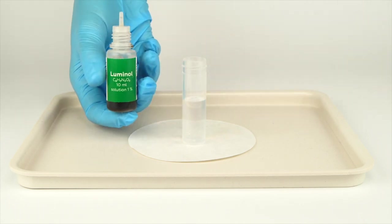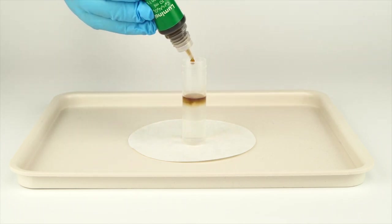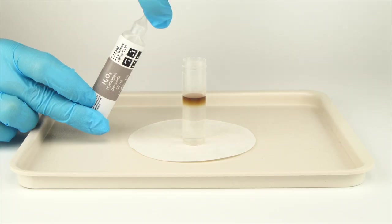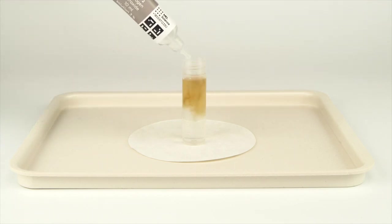Add 15 drops of luminol solution. Next, add an oxidizer. Open the bottle of hydrogen peroxide by unscrewing the plastic lid. Fill the vial to the brim.